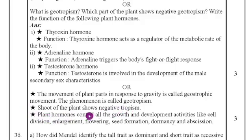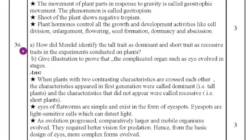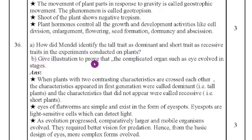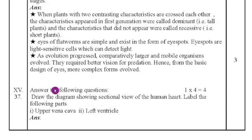Question 36 part A: how did Mendel identify tall traits as dominant and short traits as recessive in the experiment conducted on pea plants? Part B: give an illustration to prove that complicated organs evolved in stages — for example, the eye. Answers are provided for both — just copy and practice.